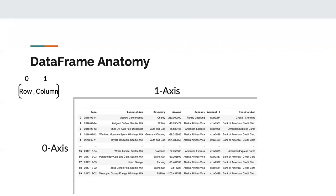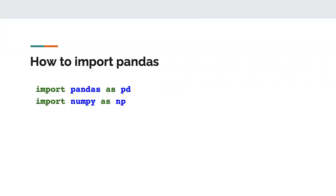This has been a brief introduction to the anatomy of a DataFrame. Now let's look at how to import pandas. Canonically, when we import pandas we alias it as 'pd'. It's also common to import numpy at the same time because it's used so much underneath the hood, and you'll often use numpy functions interchangeably with pandas.